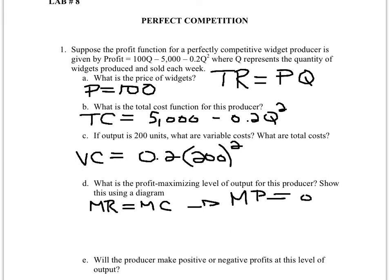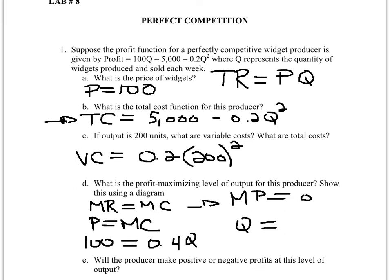Or you can simply use the fact that this is a perfectly competitive firm and know that price equals marginal cost. Price is 100, marginal cost is 0.4q — which is the derivative of the cost equation. So set 100 equal to 0.4q. Divide 100 by 0.4 to get q, which gives you 250.